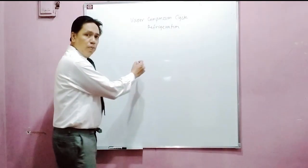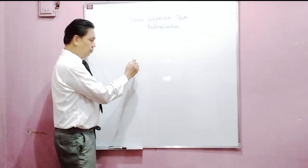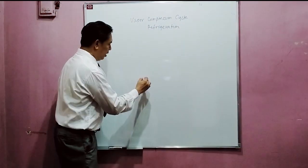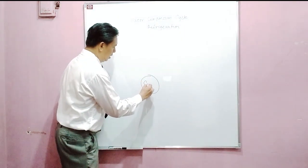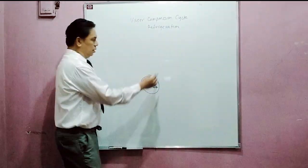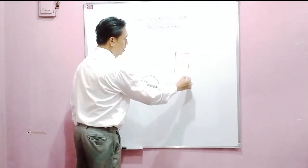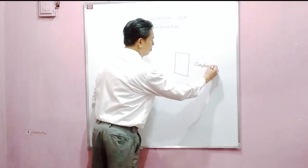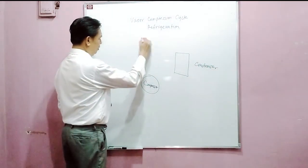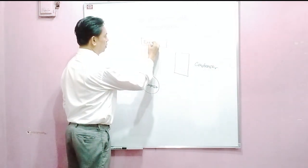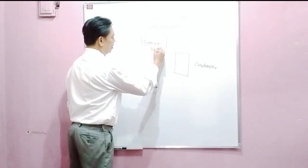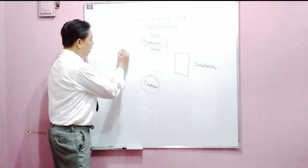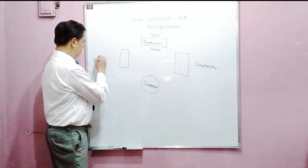I will draw the basic components of the refrigeration cycle. First, the heart of the system is here at the compressor. Then we have another key component which is the condenser, here. And here is the expansion valve — the so-called TXV, the thermal expansion valve — and the other is here, which is the evaporator.